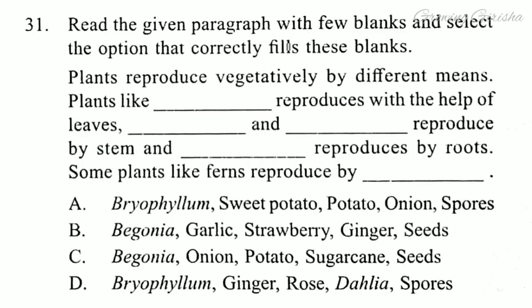Question 31. Read the given paragraph with a few blanks and select the option that correctly fills these blanks. Plants reproduce vegetatively by different means. Plants like dash reproduce with the help of leaves. Dash and dash reproduce by stem, and dash reproduces by roots. Some plants like ferns reproduce by dash. Answer is option D.